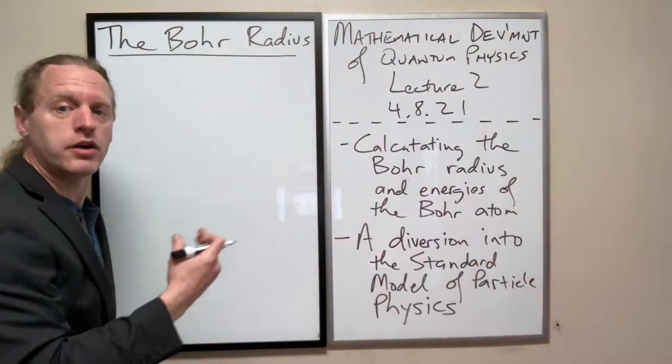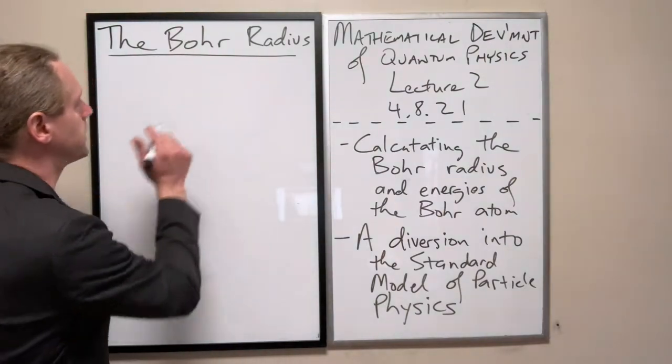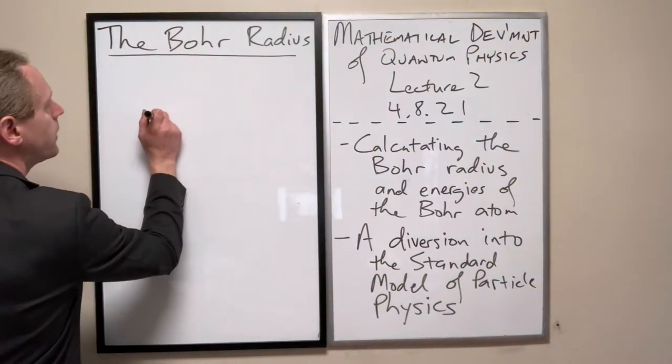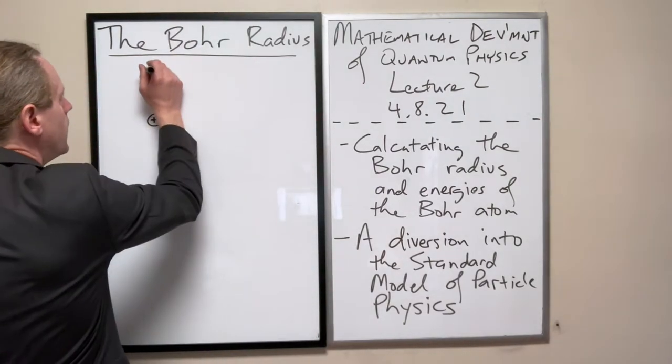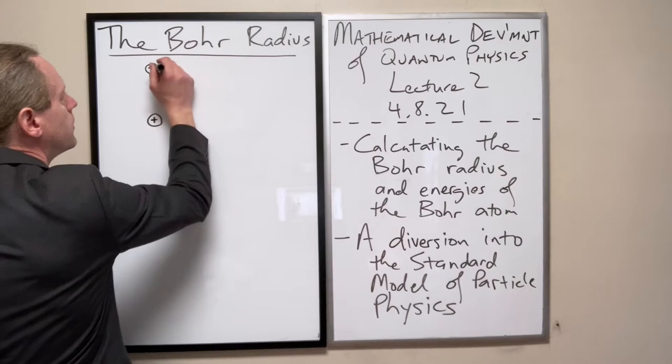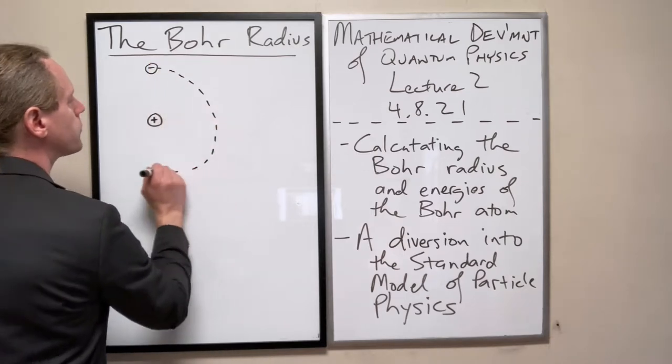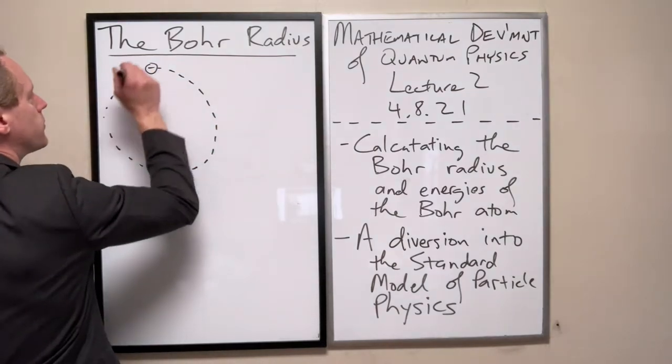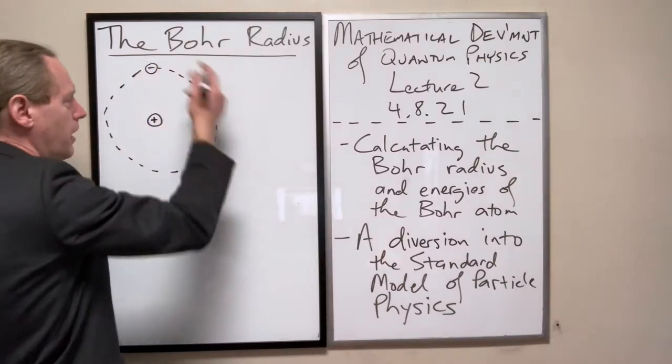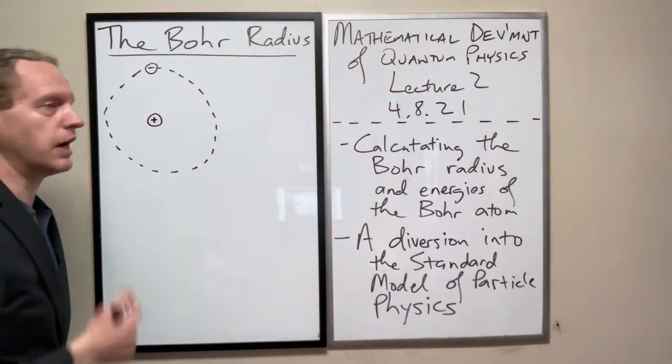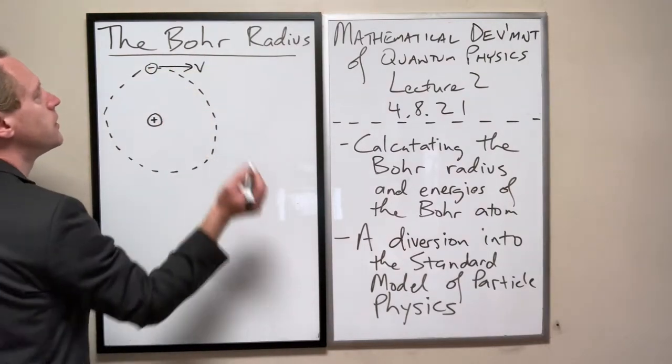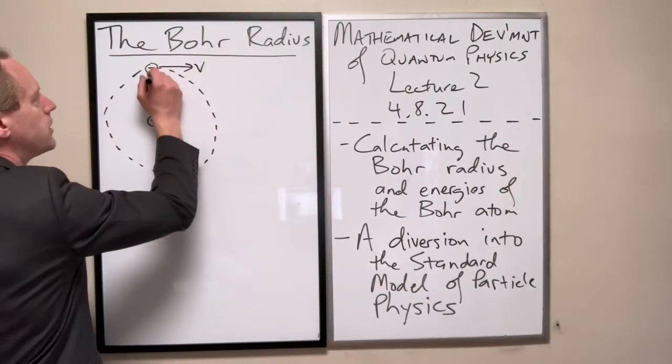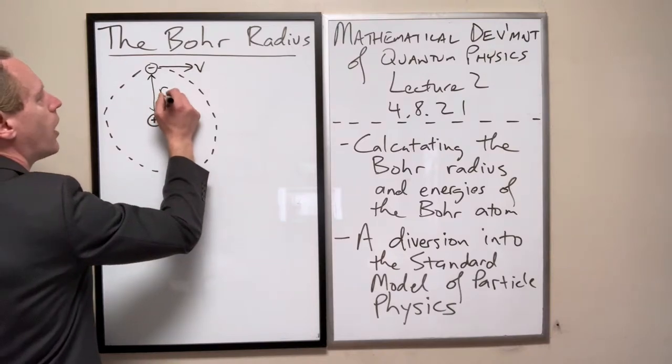We're strictly modeling a neutral hydrogen atom, to be clear. That neutral hydrogen atom consists of a single proton and a single electron, and Bohr's model assumes a classically circular orbit around this at some given velocity V and at some given radius, which I'm going to call R0.